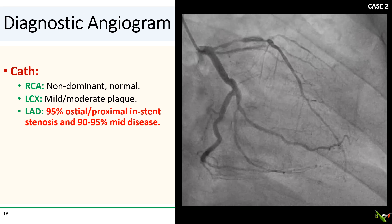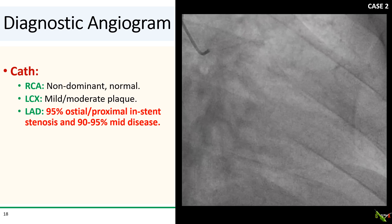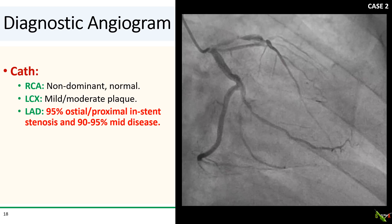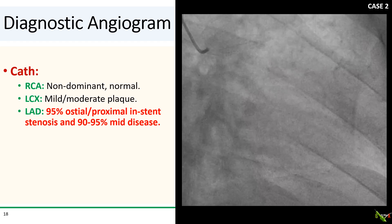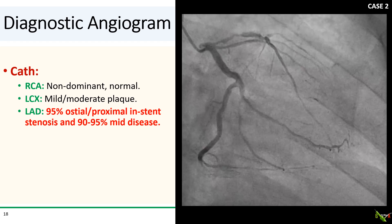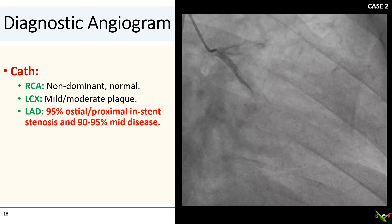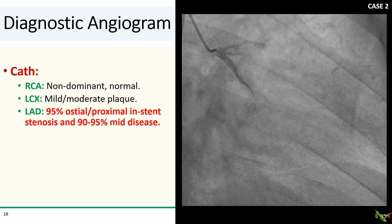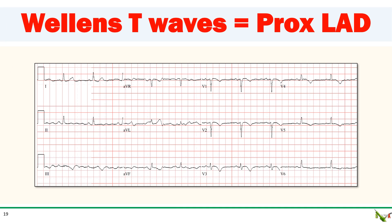On cath, the RCA and circumflex are again essentially okay, but you notice critically severe stenoses at the ostium of the LAD, in-stent in the proximal LAD, as well as just after the stent in the high-mid LAD. Boy, are you glad you took this patient to the lab as well. These inverted T-waves across the precordium are known as Wellens T-waves and are considered to be highly predictive of a severe stenosis in the proximal LAD.